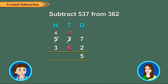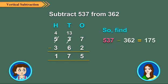Subtract 10's from 10's. So, 13 minus 6 is equal to 7. Subtract 100's from 100's. 4 minus 3 is equal to 1. So, we find 537 minus 362 is equal to 175.